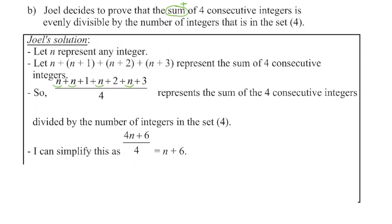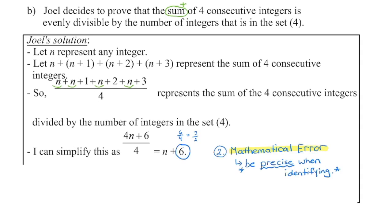So now he simplified this down. If we're dividing by four, we have to divide every term by four. Four n divided by four is n. But uh-oh, he's got a problem here because six divided by four is going to be six over four or three over two, not six.